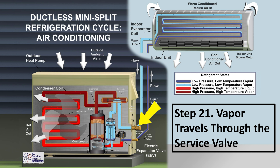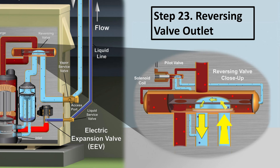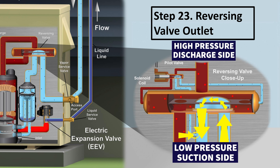Step 21: vapor travels through the service valve, remaining unchanged. Step 22: vapor enters the reversing valve, also remaining unchanged. Step 23 is the reversing valve outlet — the vapor enters, goes through the U-shaped slide, and exits through the middle tube. The spring on the solenoid is not compressed, so spring pressure pushes the small U-shaped slide over to connect the two low pressure ports. The port on the reversing valve is always the low pressure suction side, and the singular tube in the middle on top is always the high pressure discharge gas. The U-shaped slide directs the refrigerant flow.